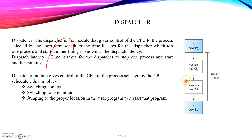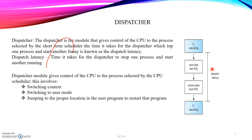Looking at this figure, process P0 is executing and its state is saved in PCB0 — the Process Control Block, which we discussed in previous classes. Then the dispatcher restores the state of process P1 and starts executing it. The time from when the dispatcher stops P0 to when it starts P1 is the dispatch latency. Dispatch latency is the time taken by the dispatcher to stop one process and start another running process.